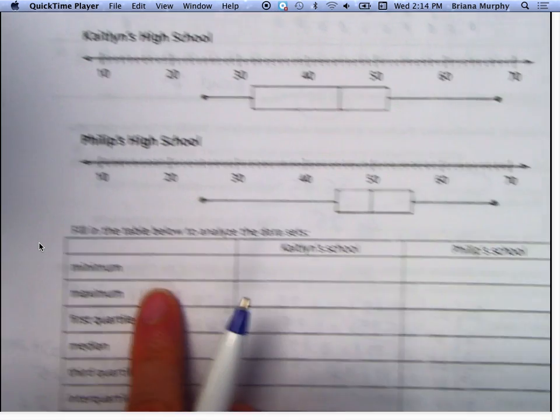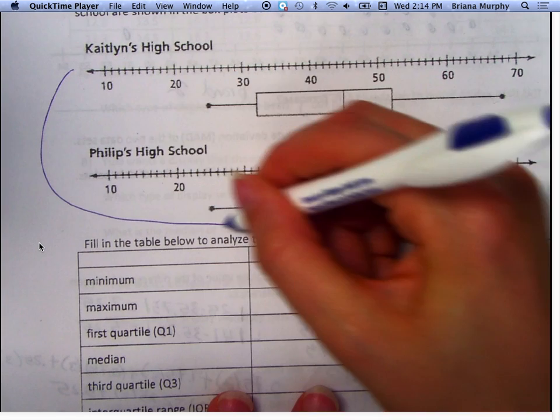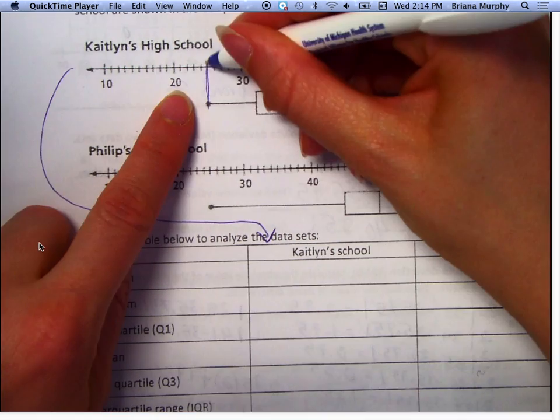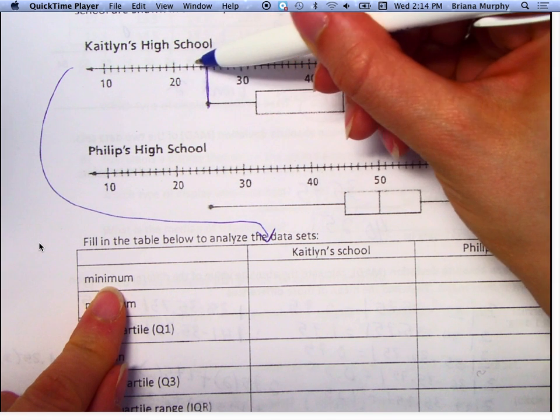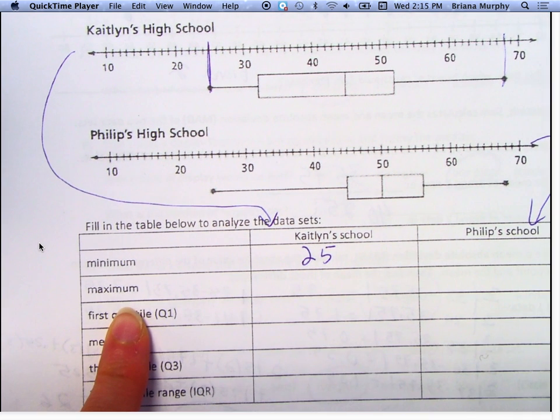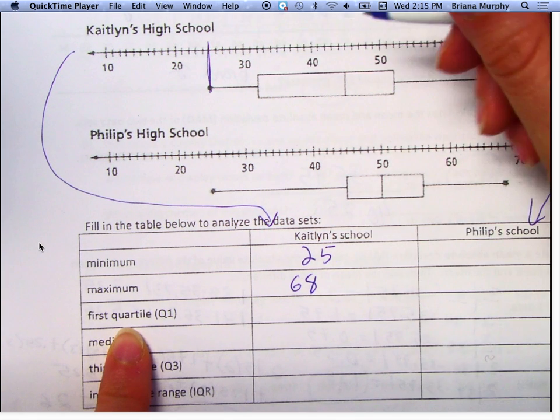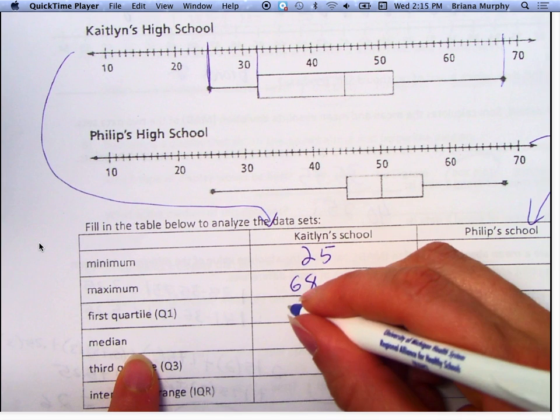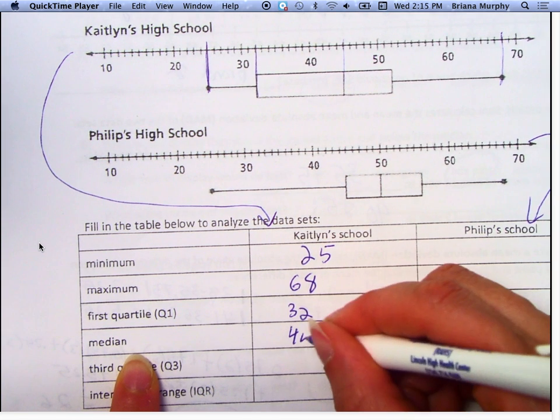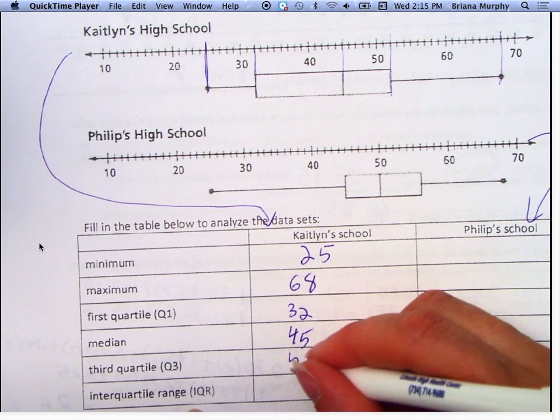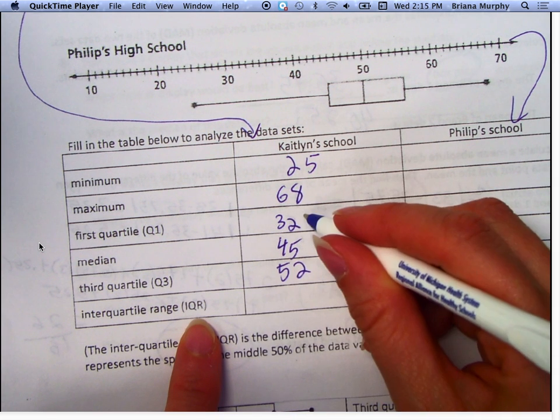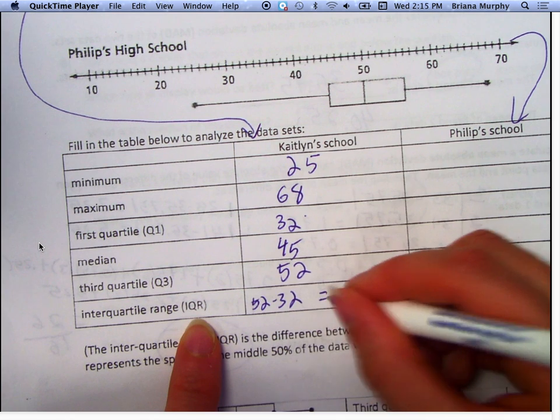We're going to fill out this chart using this data. The first one is Kaitlyn's, the second is Philip's. What is the minimum? 25. The maximum? 68. The first quartile is right here, 32. The median is right here, 44. The third quartile is right here, 52. Interquartile range means the third quartile minus the first quartile, so 52 minus 32, that gives us 20.